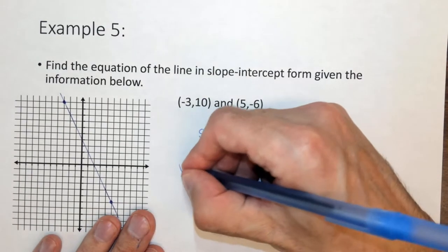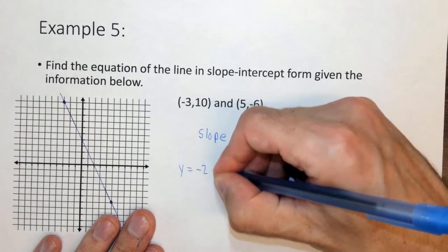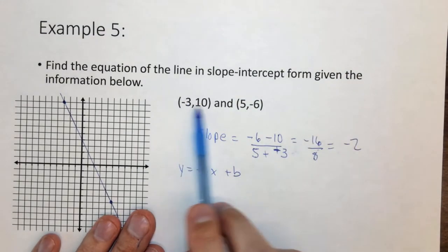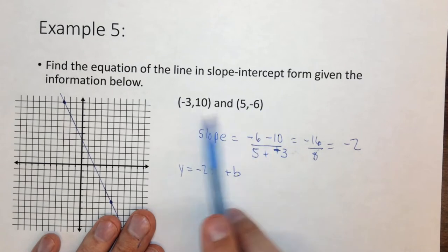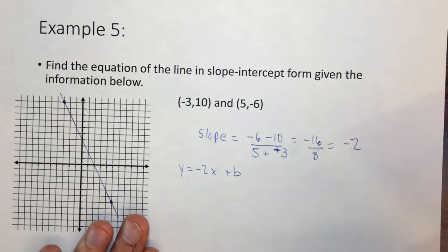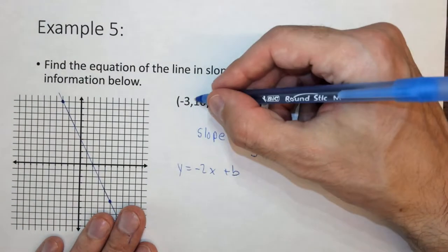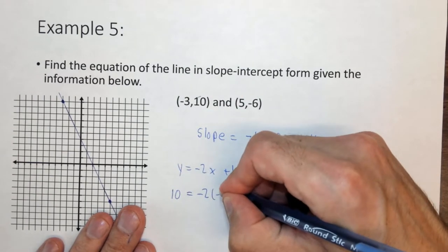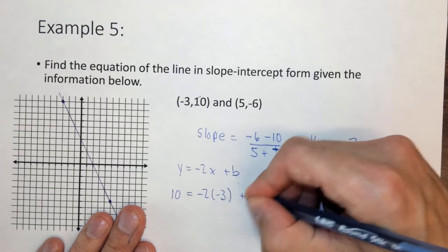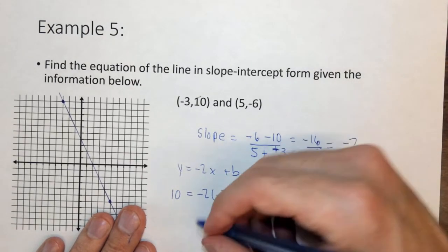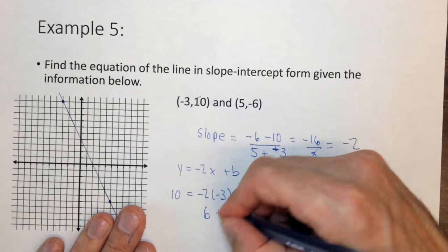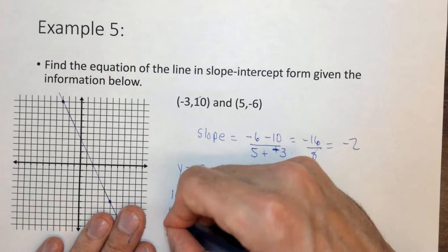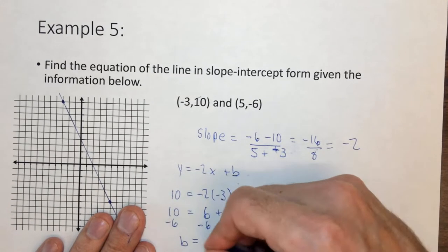Now we know y equals minus 2x plus b. We don't know b, but we have two points, so use either one. You got to be consistent. Use either these two points or these two points, but use either one, it doesn't matter. I'm going to use this one. 10 equals negative 2 times negative 3 plus b. Multiply those together, and we get 6 plus b. 10 equals 6 plus b, minus 6 minus 6,